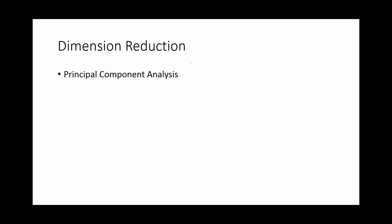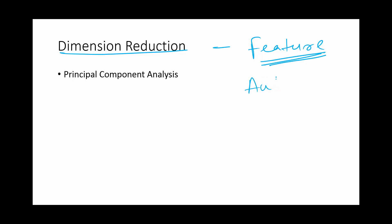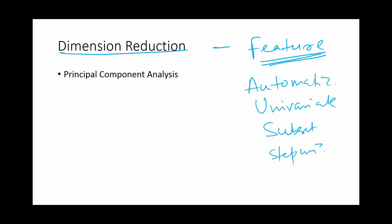Finally, we will see the difference between dimension reduction and feature selection. We have learned the different types of feature selection — how do you select the best set of features. Sometimes you can get it automatically, sometimes you can do it univariate using univariate analysis, and sometimes with a selection method like subset selection or stepwise selection. So these are the four things that we learned.